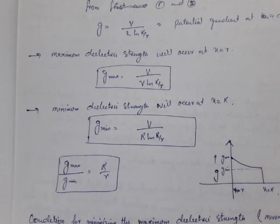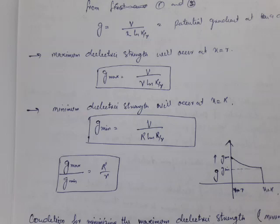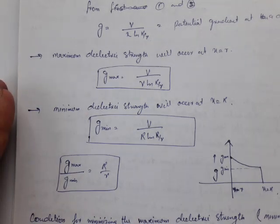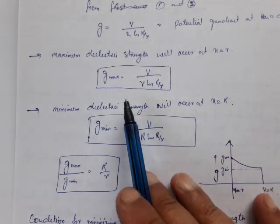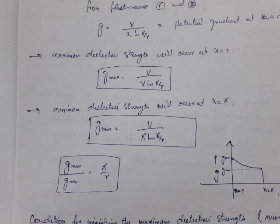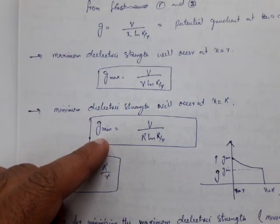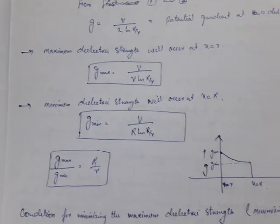Assalamu alaikum. Let us continue with the same topic — the variation of the dielectric strength from the surface of the conductor to the sheath in an electric cable. We conclude that G_max equals V divided by r times ln(R/r), and the minimum value is V divided by R times ln(R/r).